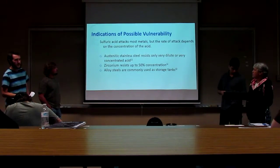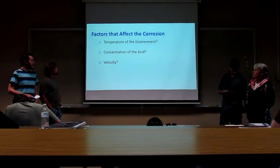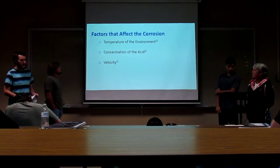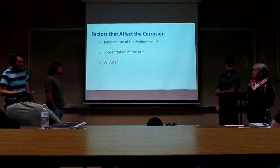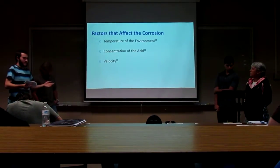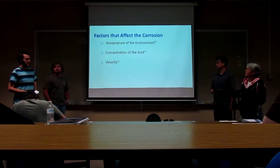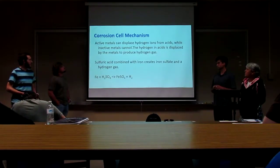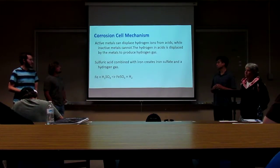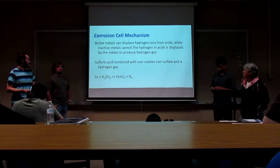Factors affecting sulfuric acid corrosion include concentration and the velocity at which the acid is moving, which plays a major role. Temperature of the environment is also a major factor. For the corrosion cell mechanism, active metals can displace hydrogen ions from acids while inactive metals cannot. The hydrogen ions are displaced by the metals to produce hydrogen gas. Sulfuric acid combined with iron creates iron sulfate and hydrogen gas, as shown by the formula: Fe + H₂SO₄ → FeSO₄ + H₂.